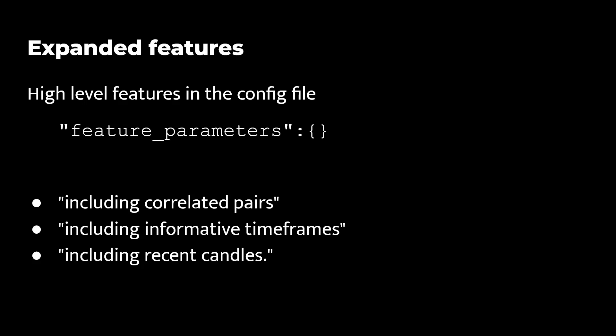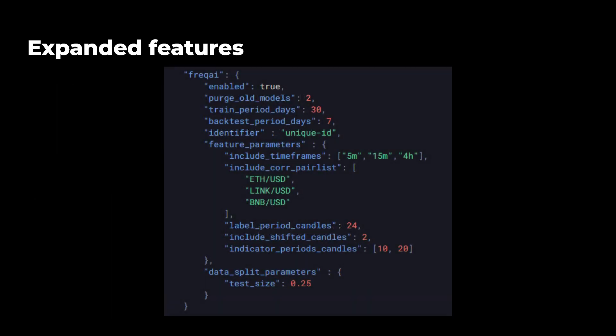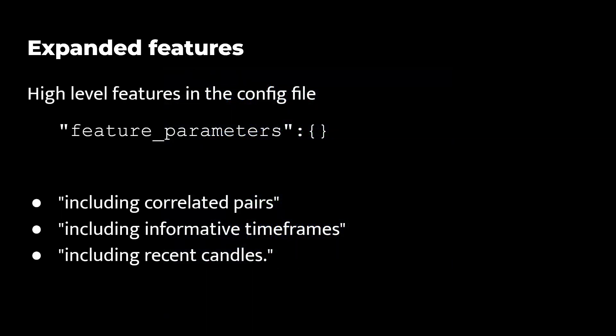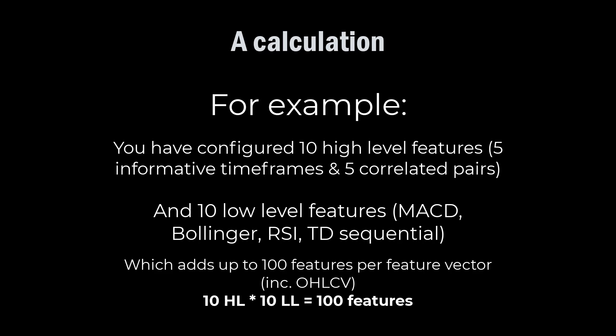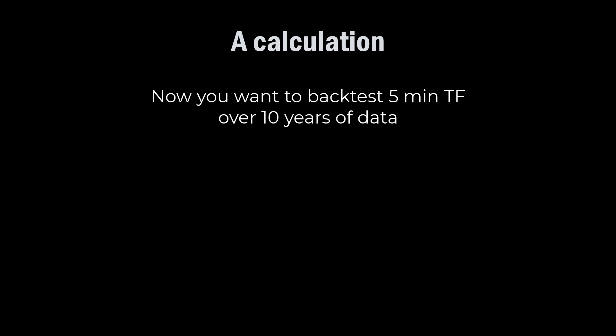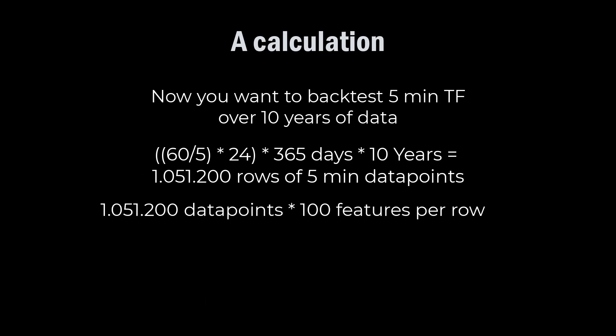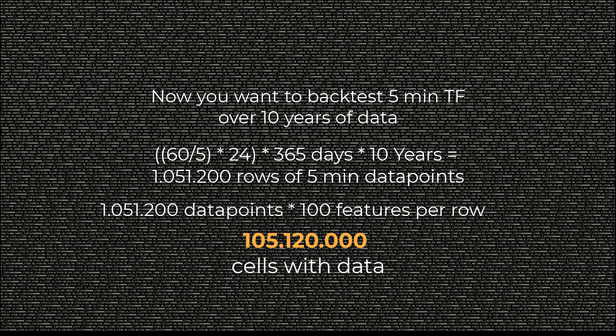Meanwhile there are also high level features. Features at this level are handled in the config file on the bot within the features parameter section and can include correlated pairs, informative time frames or recent candles. These high level features can then call to the features that are defined in the low level base. And together they can expand the complete feature set. Now you have to be aware that there can be many many combinations of high and low level features which can then be added to the data frame, which can then result in a very large feature matrix per pair. And having a feature vector of over 100 features can easily be created if you don't watch out here. Multiply this with a data set of 10 years worth of 5 minute data and you'll end up here with a collection of over 100 million data points per pair.